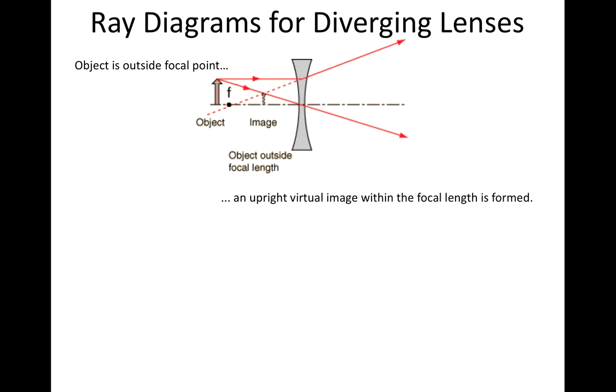Therefore, because all of the light rays don't pass through that image, we cannot call it a real image. It's virtual, which means that it must be an upright image. So when the object is outside the focal point, we get an upright virtual image.